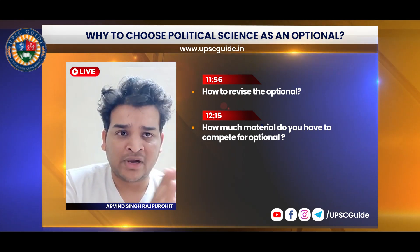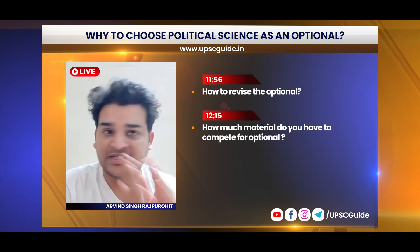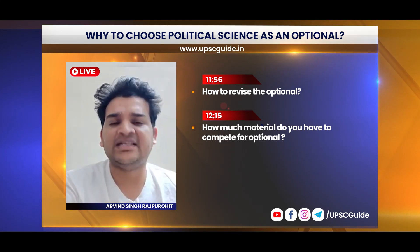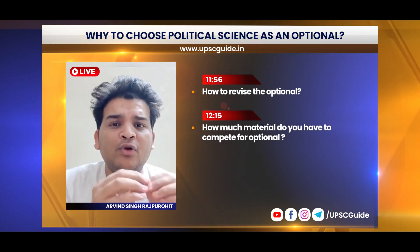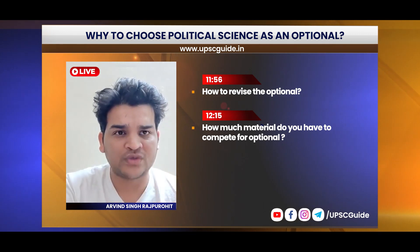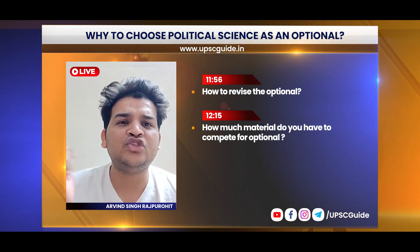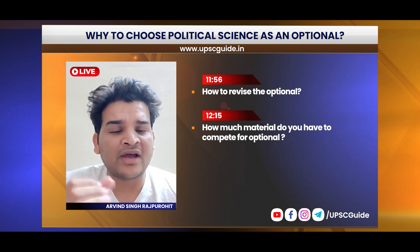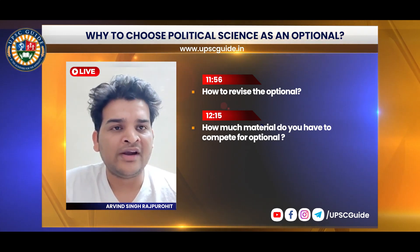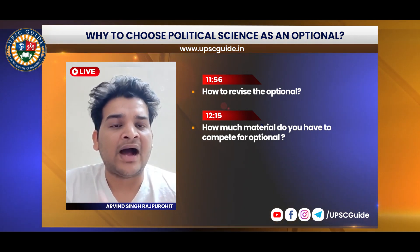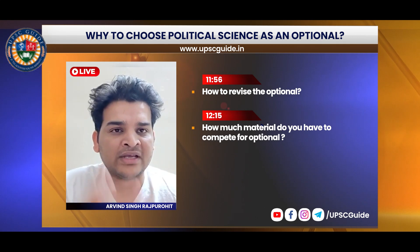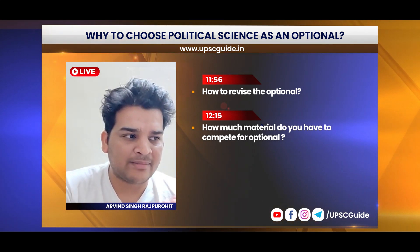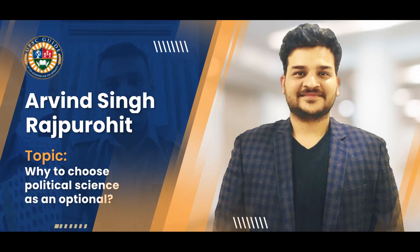Some people doubt that political science is a big subject and doesn't get covered quickly. But there are hardly 1200-1300 pages of A4 size material in total for this optional. If you read these pages and make short notes, I can guarantee you that scoring 300 marks in political science is very achievable. If you are strategically connected with me through the UPSC Guide channel, I, Arvind Purohith, will also share strategy from time to time. Thank you.